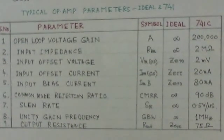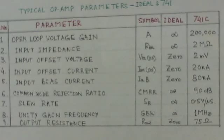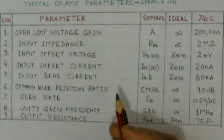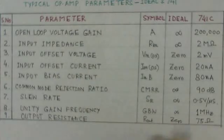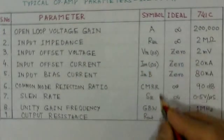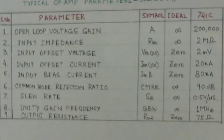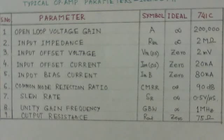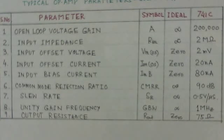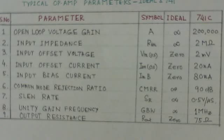A summary table has been provided showing the different parameters, their symbols, ideal values, and practical values for the 741 op-amp. This table serves as a good reference for understanding what these parameters are and what their typical values are in general. Thank you.